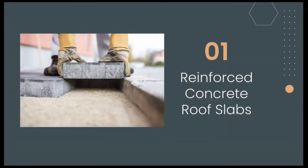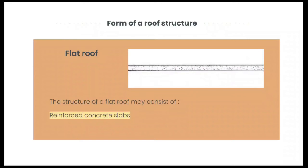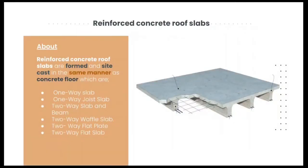My name is Zucrina and I'm going to explain about reinforced concrete roof slabs. The form of a roof structure that uses reinforced concrete slabs is a flat roof. Reinforced concrete roof slabs are formed and side-cast in the same manner as concrete floors, which are one-way slab, one-way joist slab, two-way slab and beam, two-way waffle slab, two-way flat plate, and also two-way flat slab.